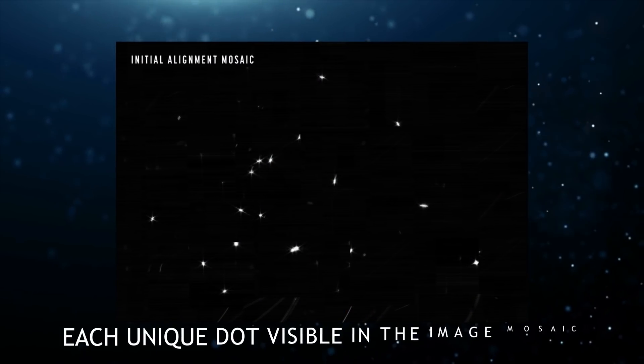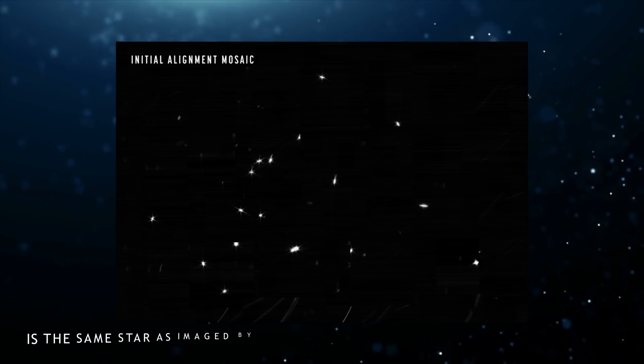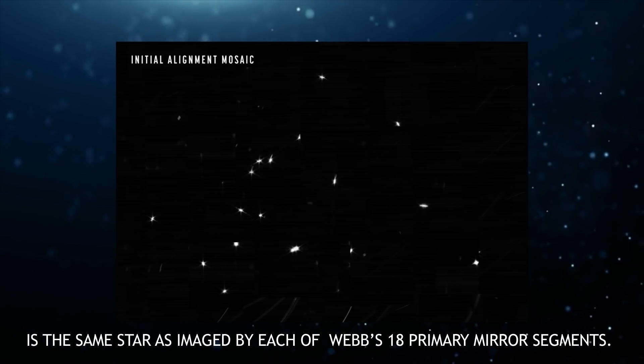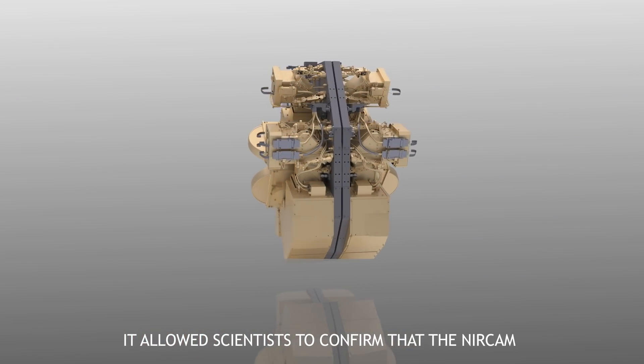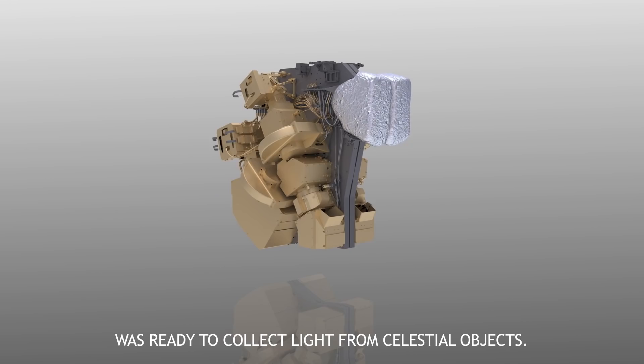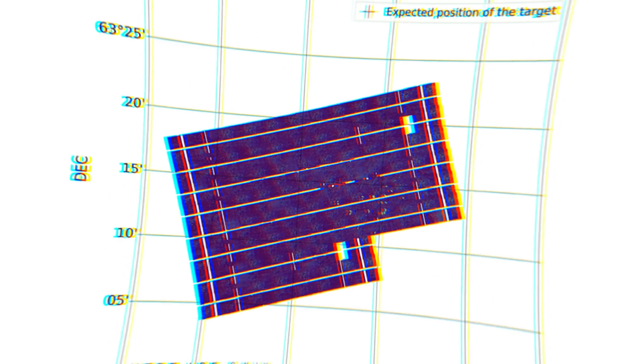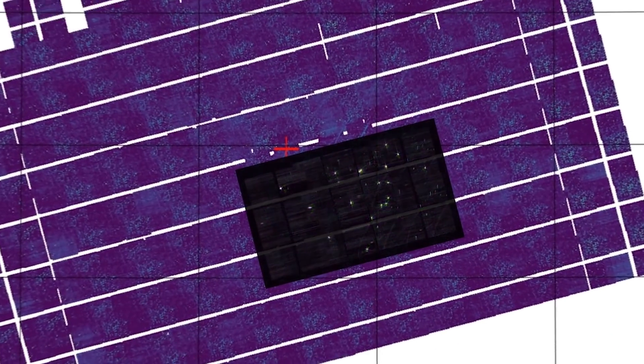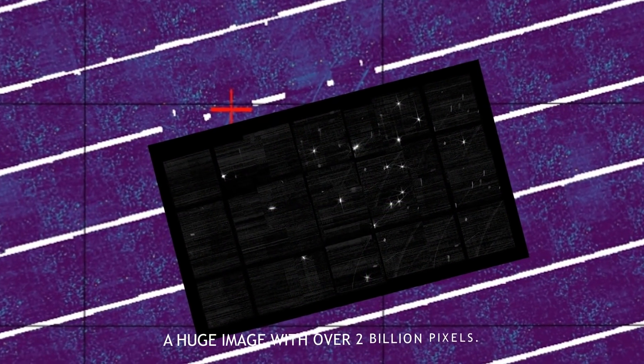Each unique dot visible in the image mosaic is the same star as imaged by each of Webb's 18 primary mirror segments. It allowed scientists to confirm that the NIRCam was ready to collect light from celestial objects. The images shown here are only a center portion of that larger mosaic, a huge image with over 2 billion pixels.